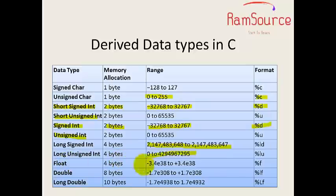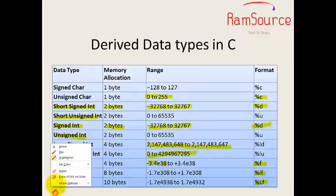Float uses 4 bytes, with range minus 3.4 E minus 38, and the format specifier is percentage f. Double uses 8 bytes. Please make a note that we have a small 'lf' for long float, and capital 'LF' - make note of all these.